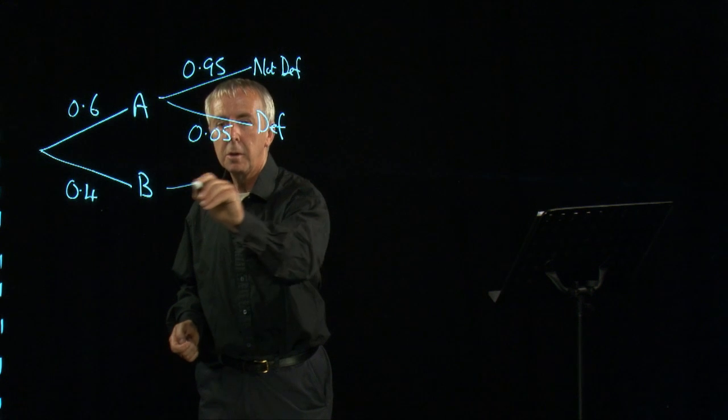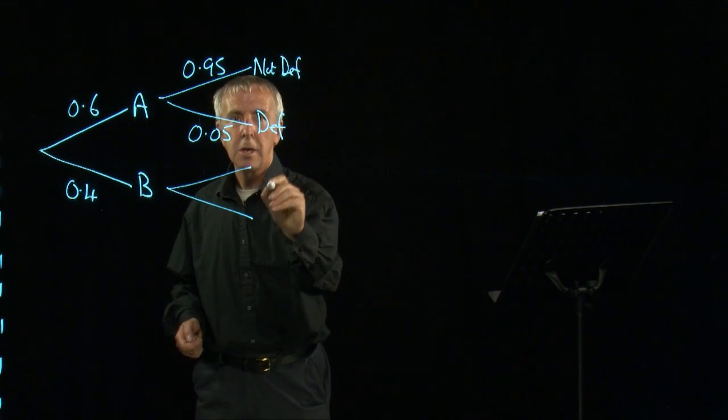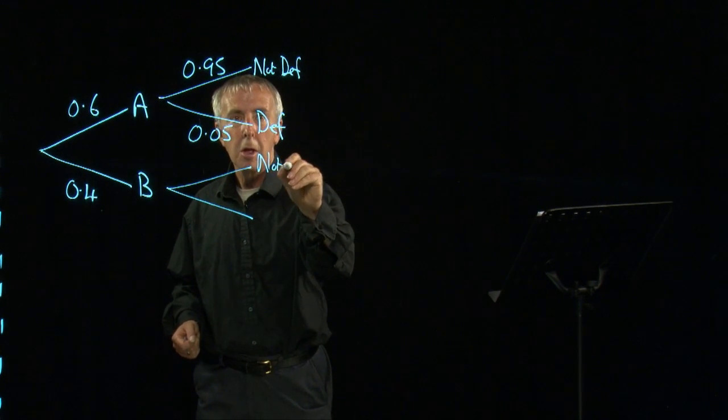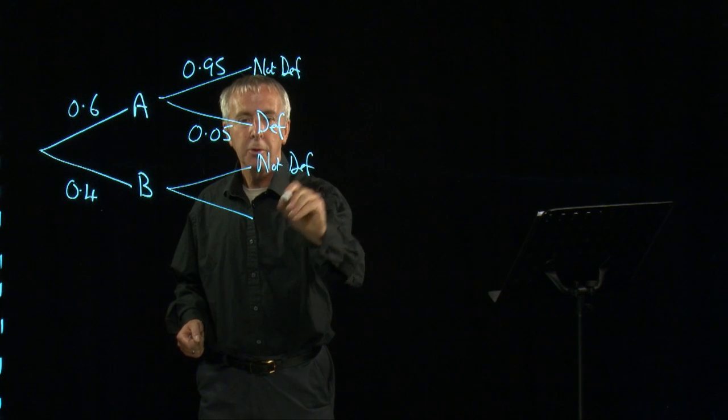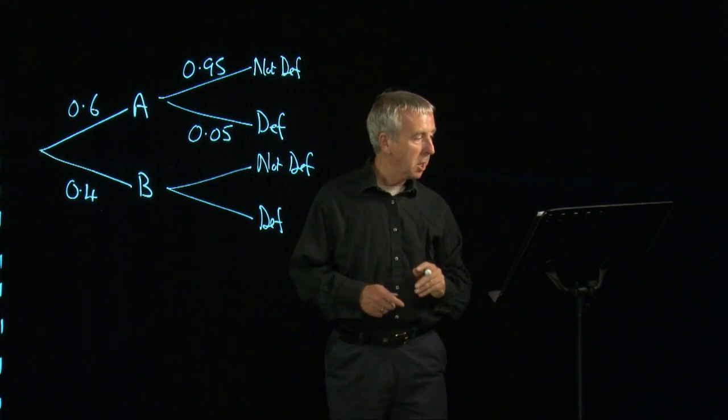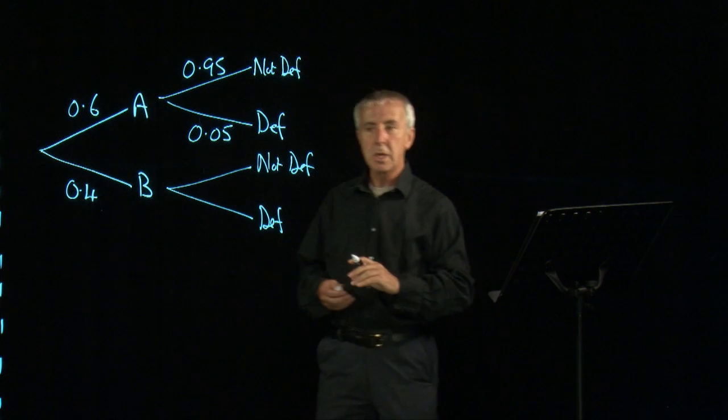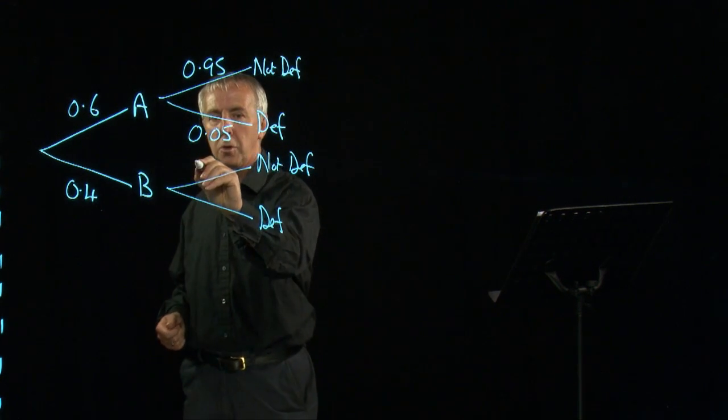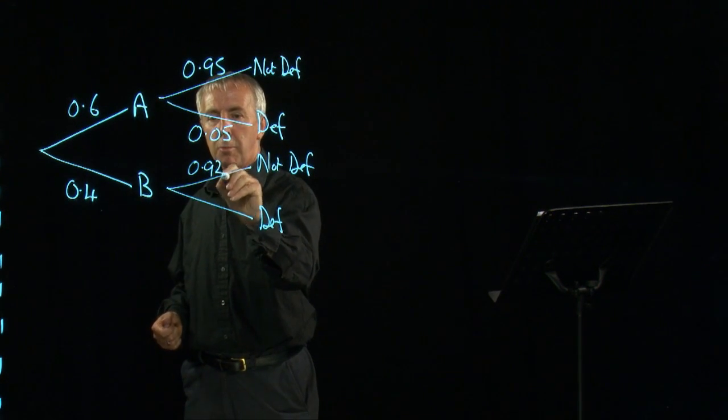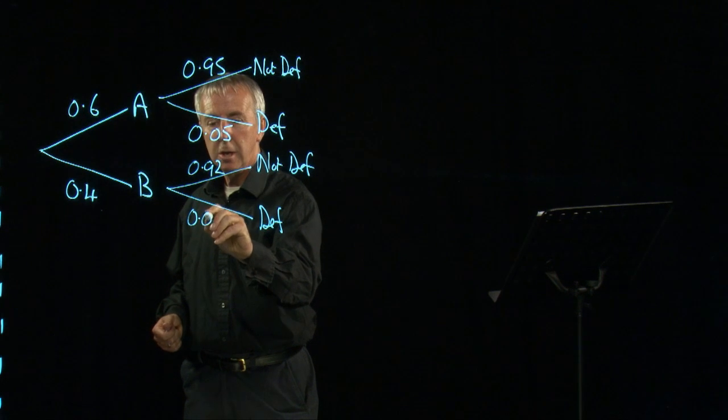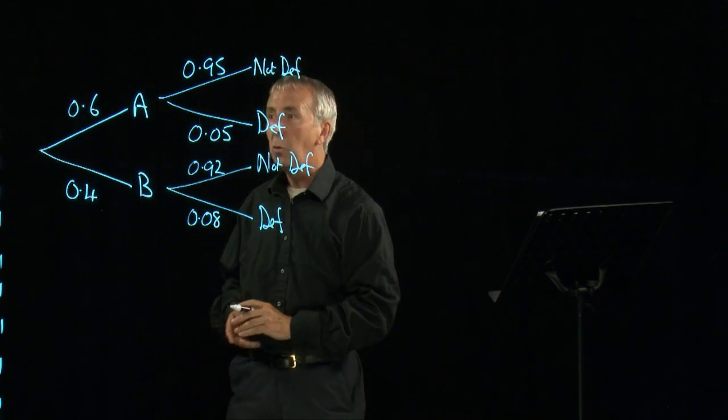On the other hand, machine B is different. Let's say that machine B only produces 92% good items. It produces 8% defective items. It's the older one if you like.